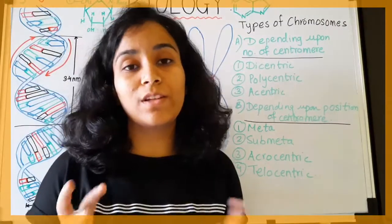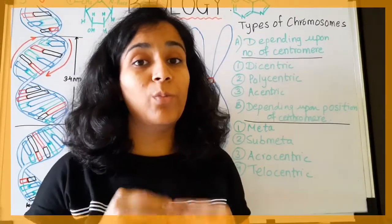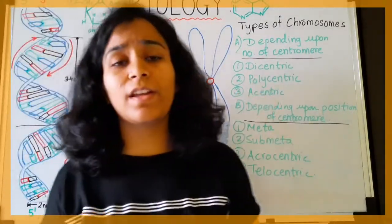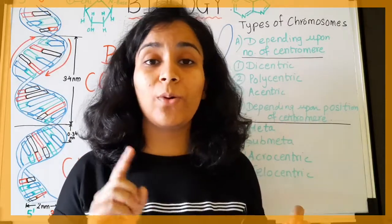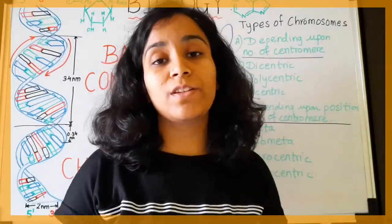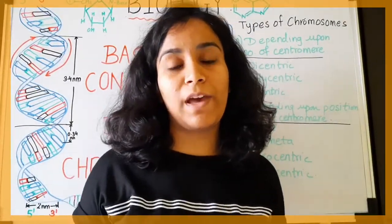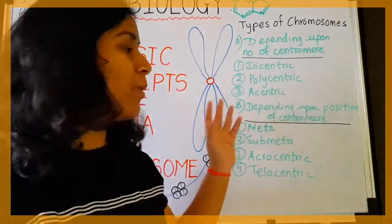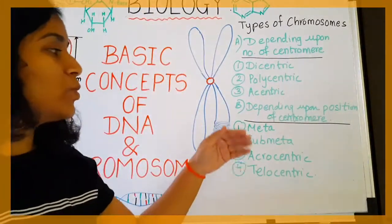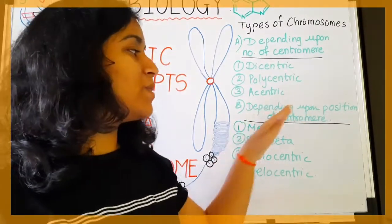Polycentric chromosomes are those in which more than two centromeres are present in a chromatid. Acentric chromosomes are those with no centromere — this can only happen if a segment of the chromosome has been freshly broken and doesn't have a longer span of life. Now let's move to the second category: types based on the position of the centromere.